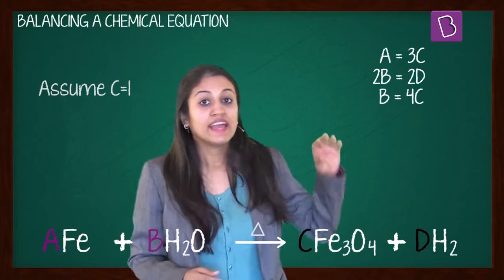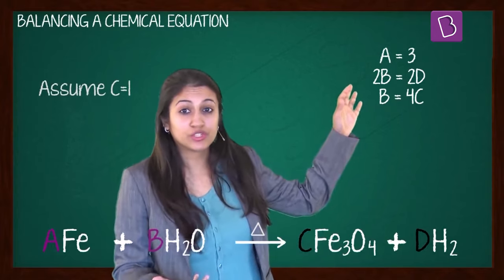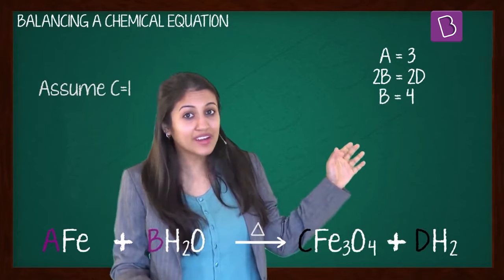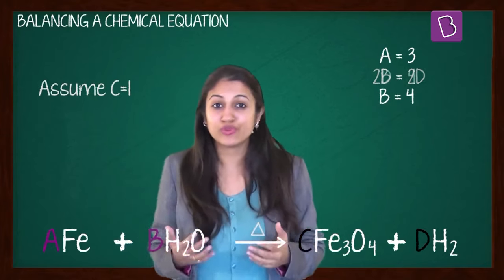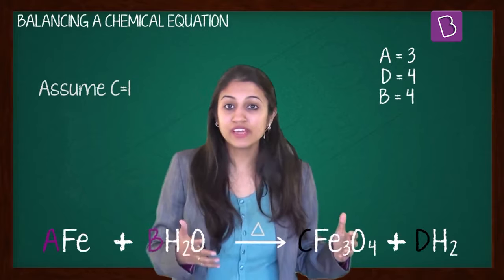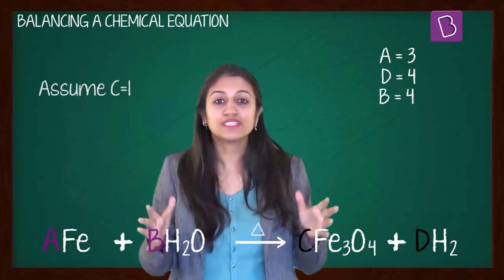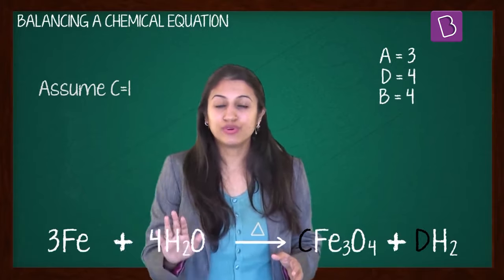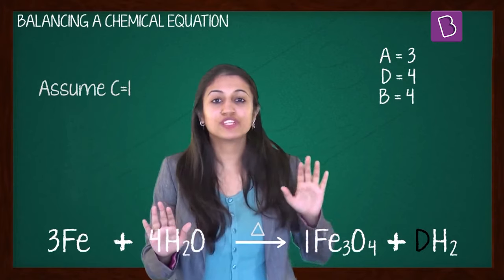Since C is equal to 1, what is A? A is equal to 3 from the first equation. And B is equal to 4 from the third equation. And finally, D is equal to 4 because B is equal to D from the second equation. So what's your balanced equation? 3Fe plus 4H2O giving you Fe3O4 plus 4H2.